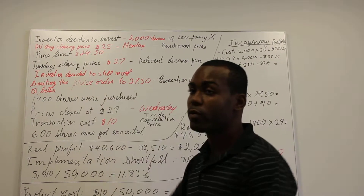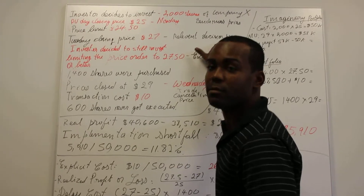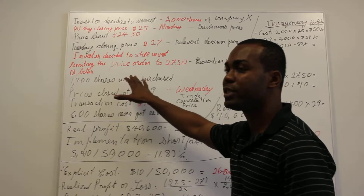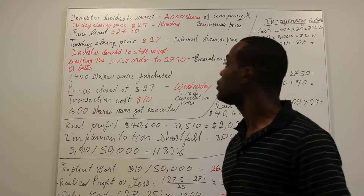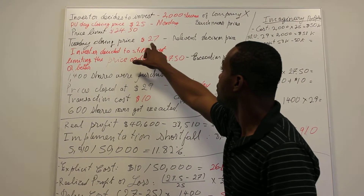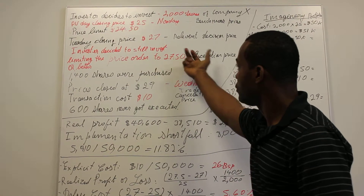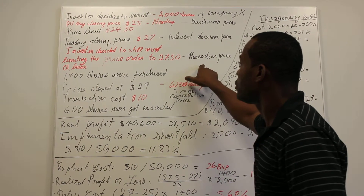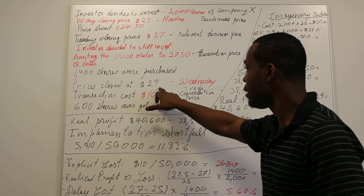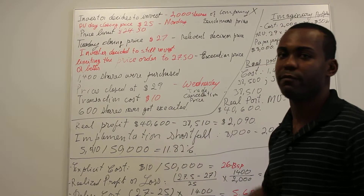On Tuesday night, when none of his orders got executed but he still wanted to invest and the price closed at $27, we call that the relevant decision price. On Wednesday during the day, 1,400 shares were purchased at $27.05 — we call that the execution price. On Wednesday night, when prices closed at $29 and the remaining 600 shares never got executed, we call that the trade cancellation price — just to be familiar with the terminologies.